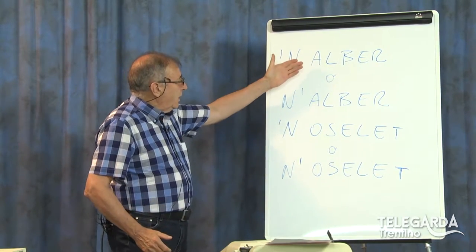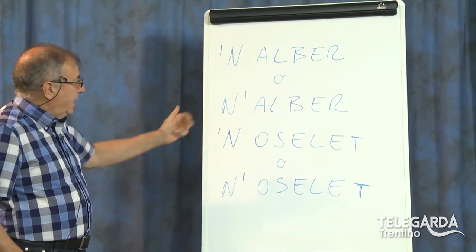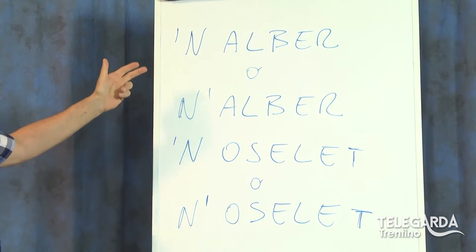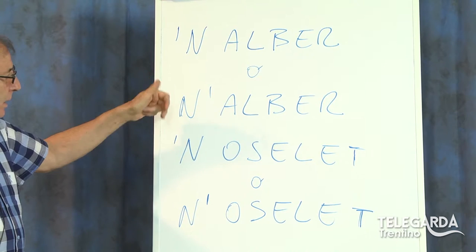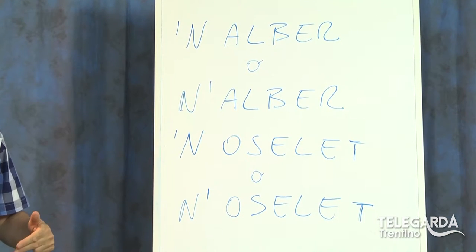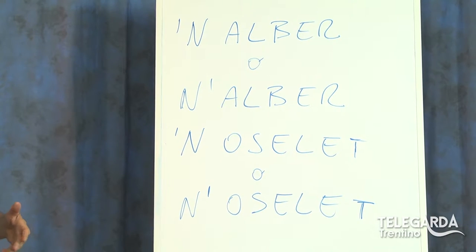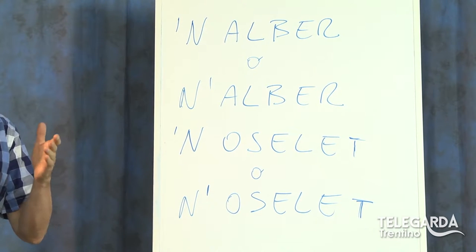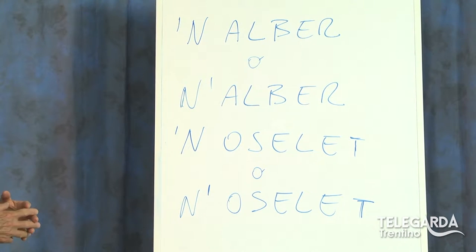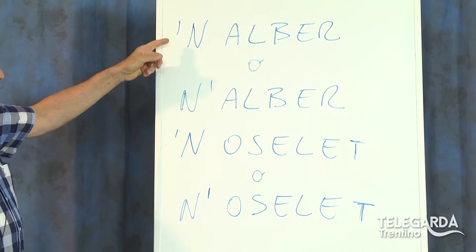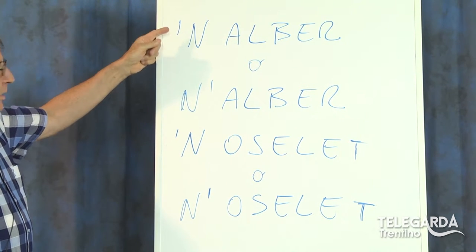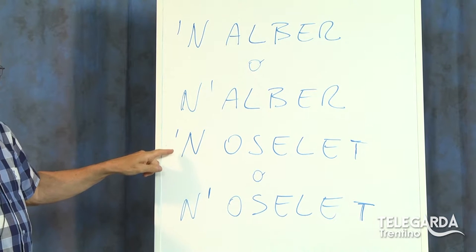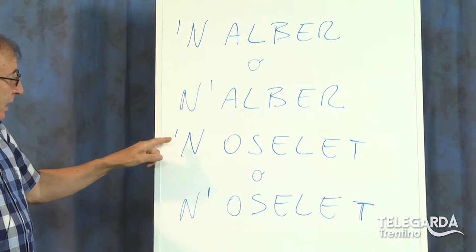Ci sono questi nomi maschili che iniziano con una vocale, che presentano l'articolo indeterminativo: N'alber, N'oselet, potrebbe dire N'om. Chiaramente non si dice N'om, non si dice N'alber — si dice N'alber; non si dice N'oselet — si dice N'oselet. Ma a questo punto il problema è: se qui è N'alber e cadendo la E si mette l'apostrofo, N'oselet, se cade la E si mette l'apostrofo e quindi N'oselet con l'apostrofo qua.